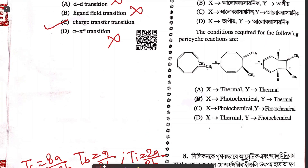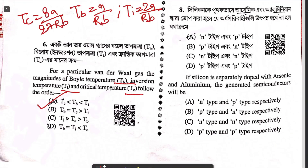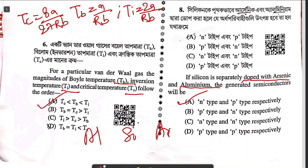Question seven asks for the condition required for a photochemical reaction — this is a pericyclic reaction, specifically an 8π electrocyclic ring closure. The only possible answer is option B. Question eight: silicon is separately doped with arsenic and with aluminum. The correct answer is option 2.